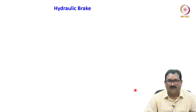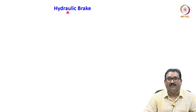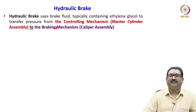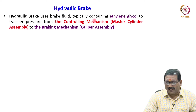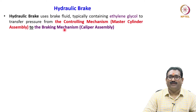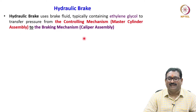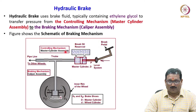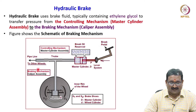Now we will see one more application of Pascal's law: the hydraulic brake. You come across this in two-wheelers as well as four-wheelers. The hydraulic brake is very accurate — it will stop at an instant at the same place. The hydraulic brake uses a brake fluid, typically ethylene glycol, to transfer pressure from the controlling mechanism to the braking mechanism. The controlling mechanism is the master cylinder assembly, and the braking mechanism is the caliper assembly.